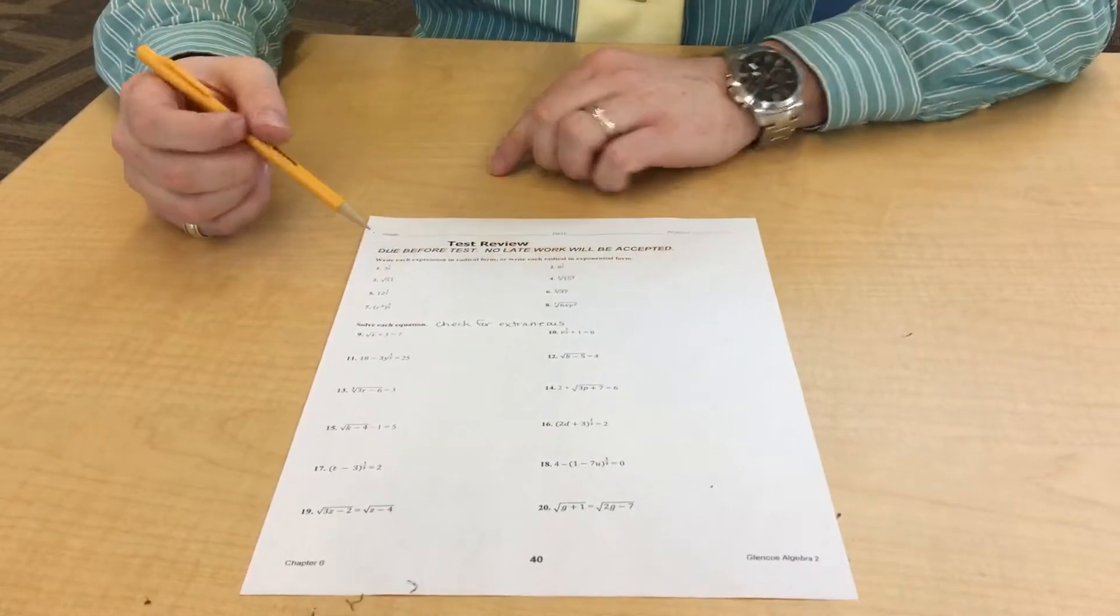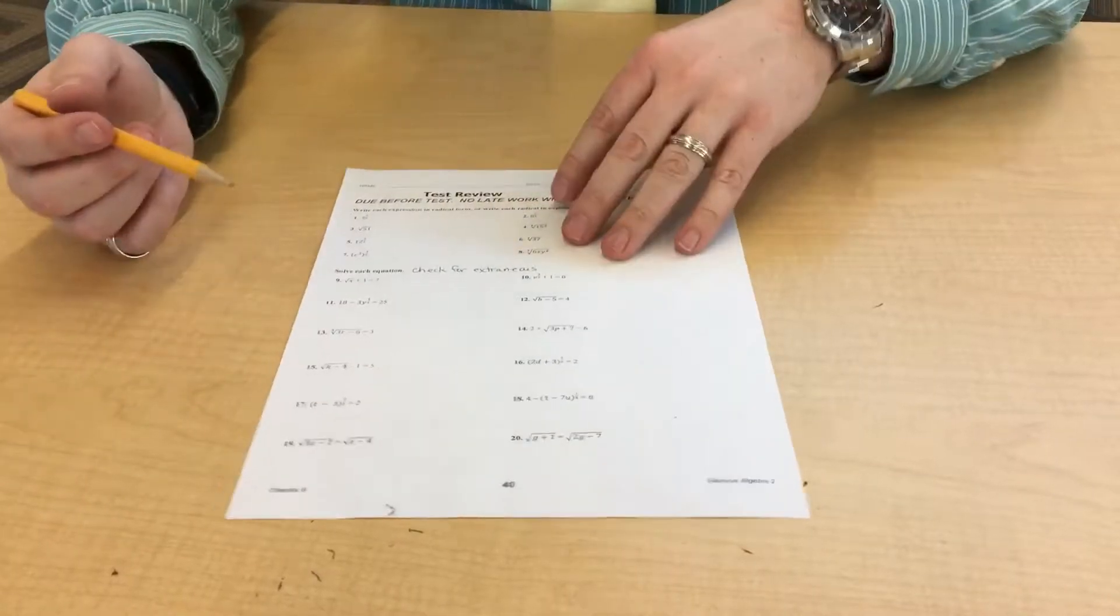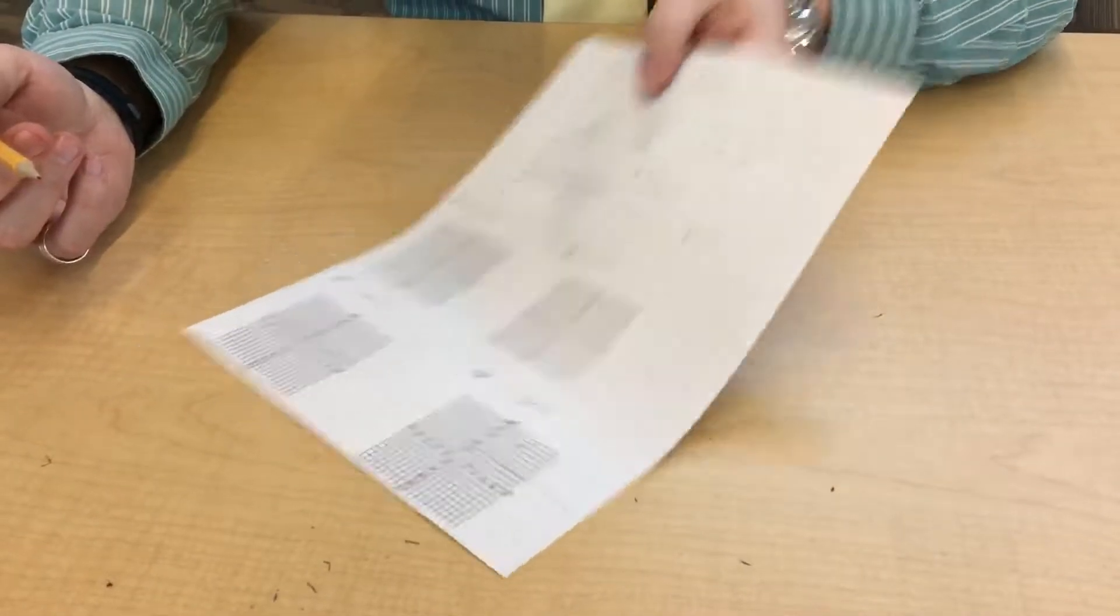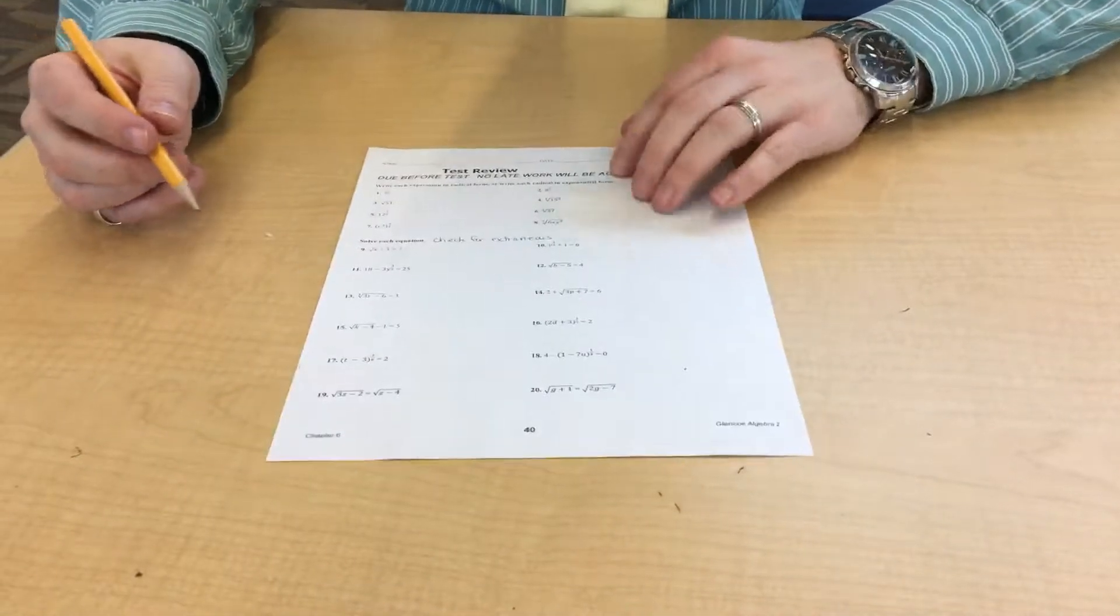Alright, today we're going to be going over this test review for Algebra 2. It's a lot of stuff on square roots, fractional exponents, rationals, all this kind of stuff. So I'm going to try to go quick. You can pause and rewind as you need to.